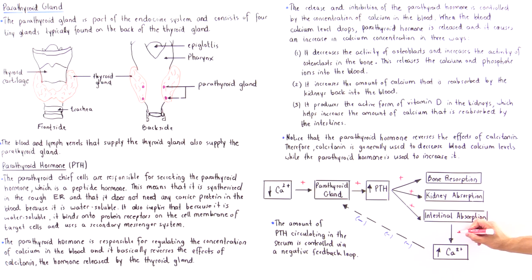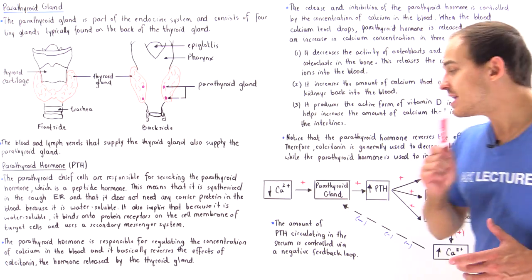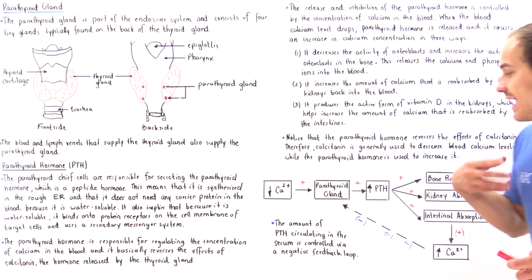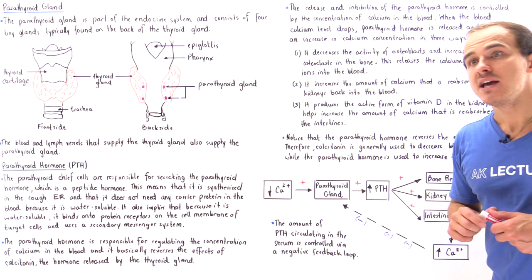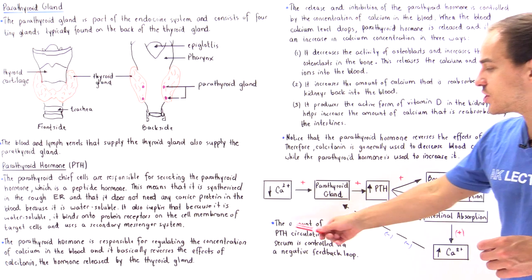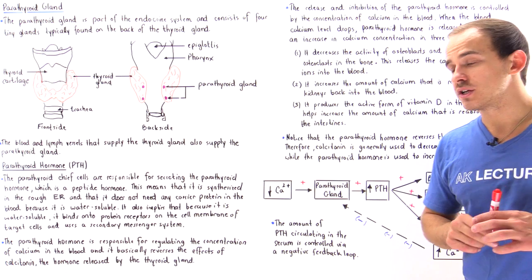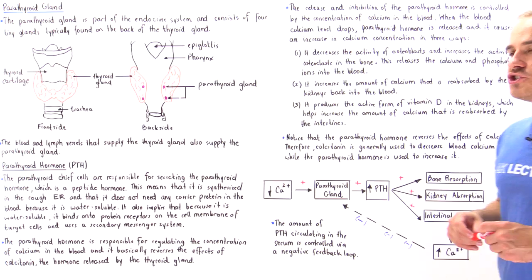Over time, as the concentration of calcium in our blood increases, this will create a negative feedback loop. It will cause our parathyroid gland to basically decrease in its release of PTH. Over time, this will stabilize and maintain the concentration of calcium in our blood serum, in our blood plasma. The amount of PTH — the parathyroid hormone — that actually circulates in our serum is controlled via a negative feedback loop.